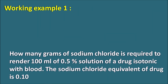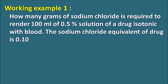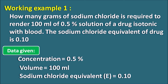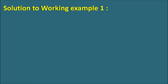Working Example 1: How many grams of Sodium Chloride is required to render 100 ml of a 0.5% solution of a drug isotonic with blood? The Sodium Chloride Equivalent of the drug is 0.10. The data given: concentration is 0.5%, volume is 100 ml, and the Sodium Chloride Equivalent E value is 0.10. We have to calculate how much Sodium Chloride is required to produce the isotonic solution.